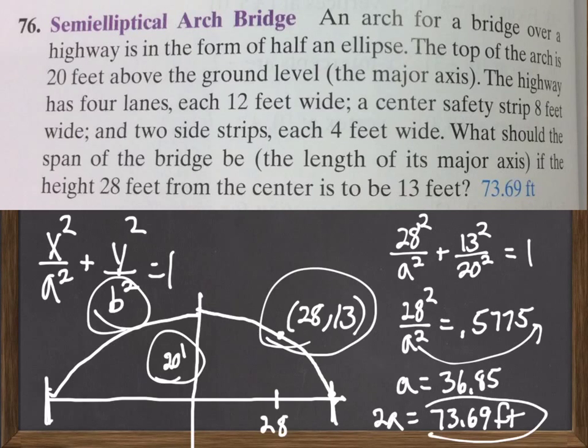Okay. So, again, we're just using that equation here of the ellipse, taking the information that we have, putting it into the problem, and then solving for what is unknown. Okay. So, that's the idea. Until next time.